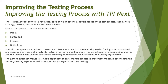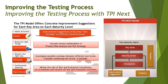Unlike CMMI, TPI Next consists of only four maturity levels: Initial, Controlled, Efficient, and Optimizing. To understand these, we first need to understand what exactly these levels are and what the metrics of a TPI Next model would look like in an organization, before getting into the different key areas of TPI Next.